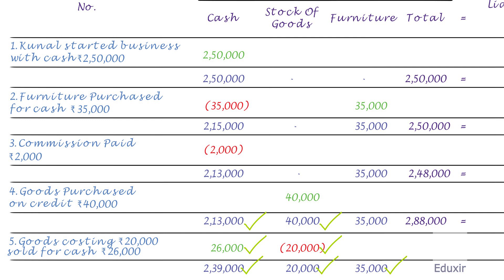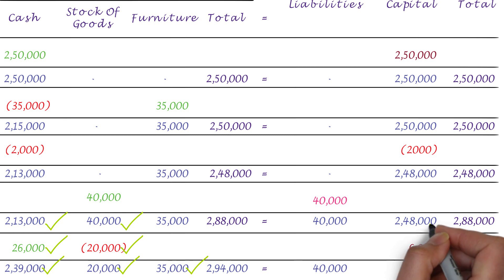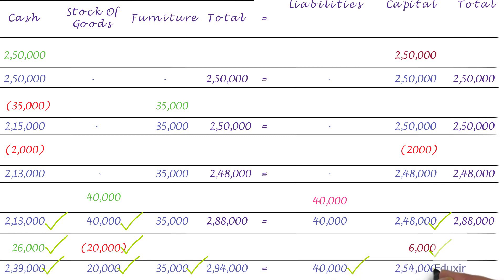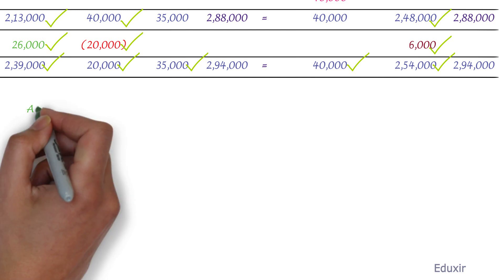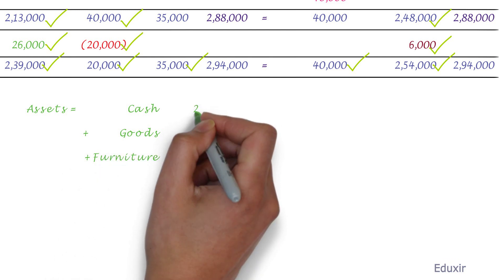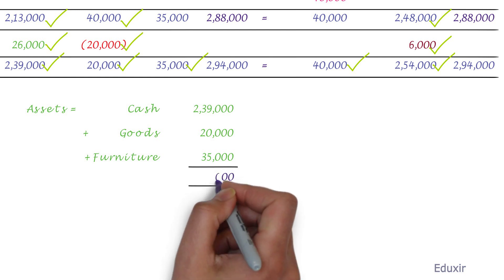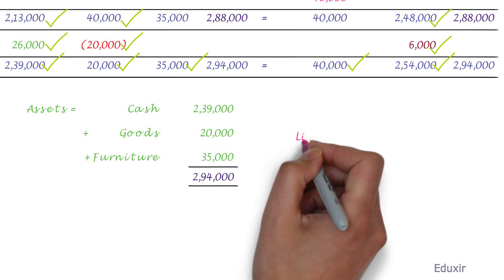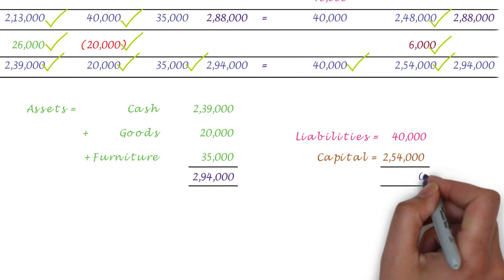Adding ₹26,000 to the cash asset, the cash is now ₹2,39,000. Adding all assets, the business now has ₹2,94,000 worth of assets. The business has a liability of ₹40,000. Adding ₹6,000 profit to the existing ₹2,48,000 capital, the total capital will be ₹2,54,000, and total of liabilities and capital would be ₹2,94,000. For verification: the total of all assets is the sum of cash ₹2,39,000, stock of goods ₹20,000, and furniture ₹35,000, adding up to ₹2,94,000. Liabilities of ₹40,000 plus capital of ₹2,54,000 equals ₹2,94,000.